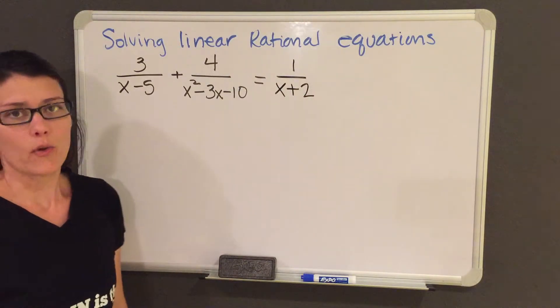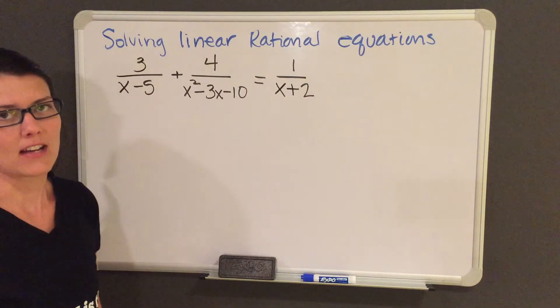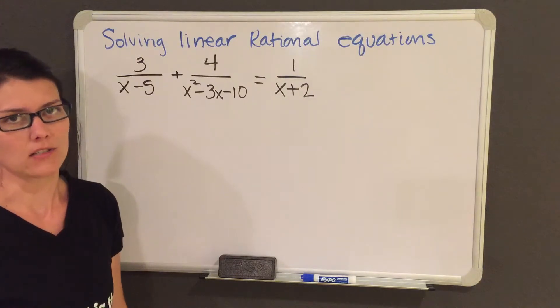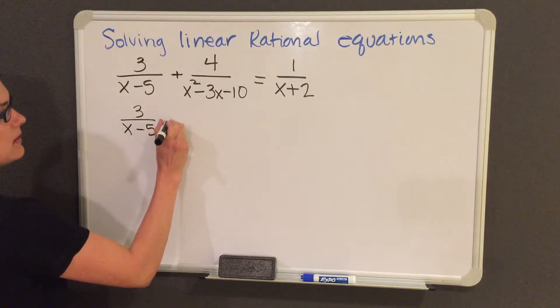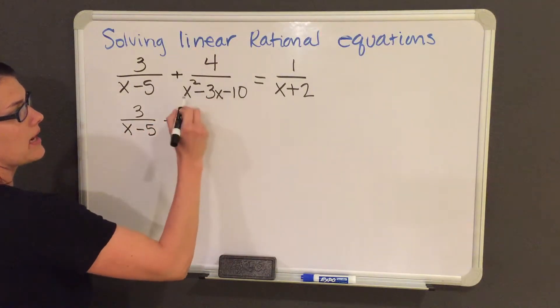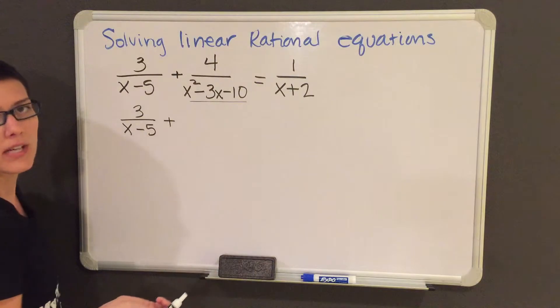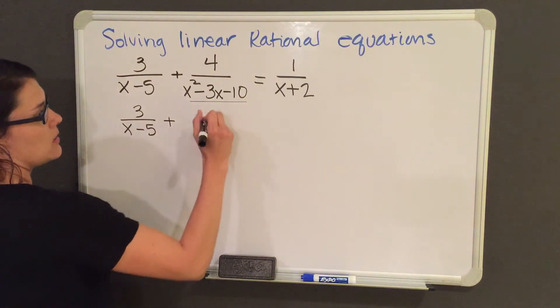To solve this rational equation, the first thing you want to do is factor any of the denominators that you have. This first denominator does not need to be factored, so I will just rewrite it. This next denominator, x squared minus 3x minus 10, needs to be factored.